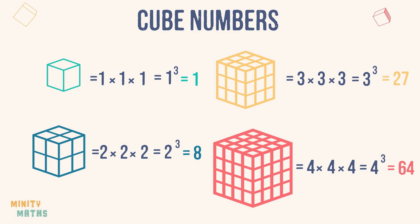So, here are the first 4 cube numbers: 1, 8, 27, and 64.